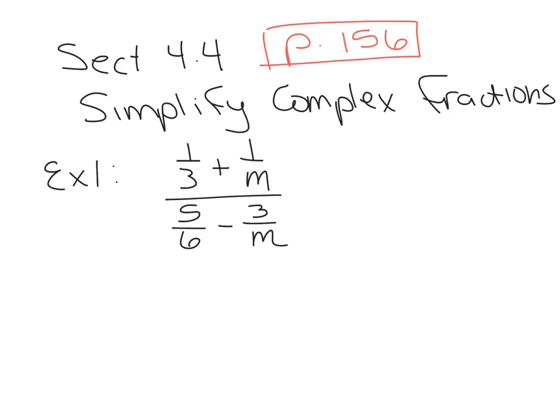The shorter way involves looking at all the denominators — I'm going to circle them. We find the least common denominator from all denominators involved. We practiced that in the last video, so if you need a review go to the previous video. The denominators are 3, M, 6, and M. The least common denominator for 3 and 6 is 6.